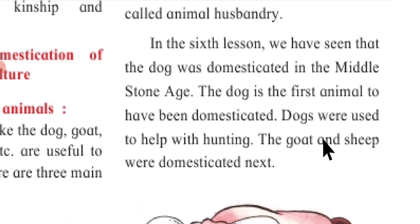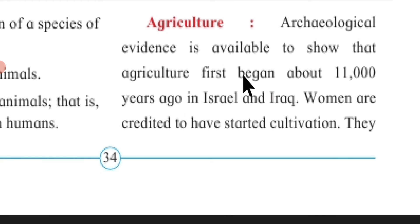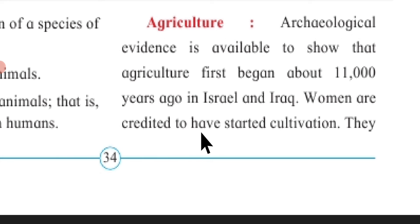The goat and sheep were domesticated next. Agriculture: Archaeological evidence is available to show that agriculture first began about 11,000 years ago in Israel and Iraq.